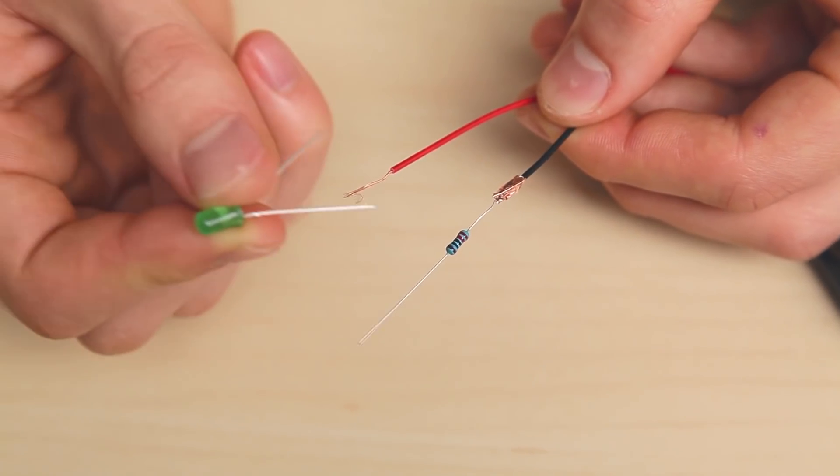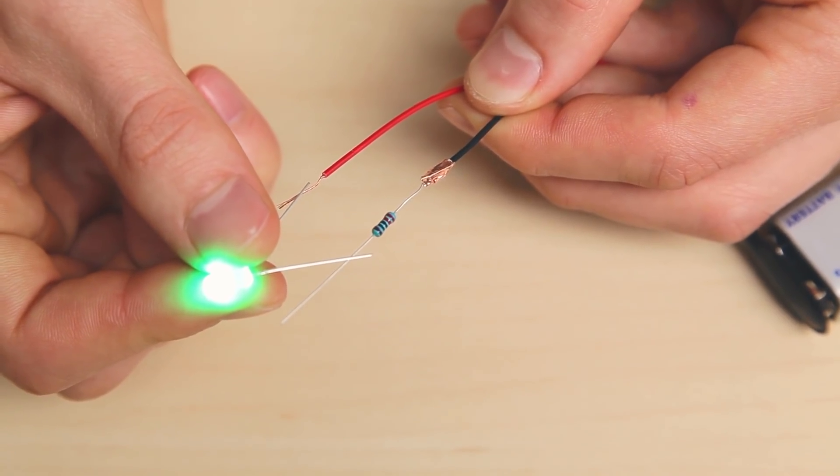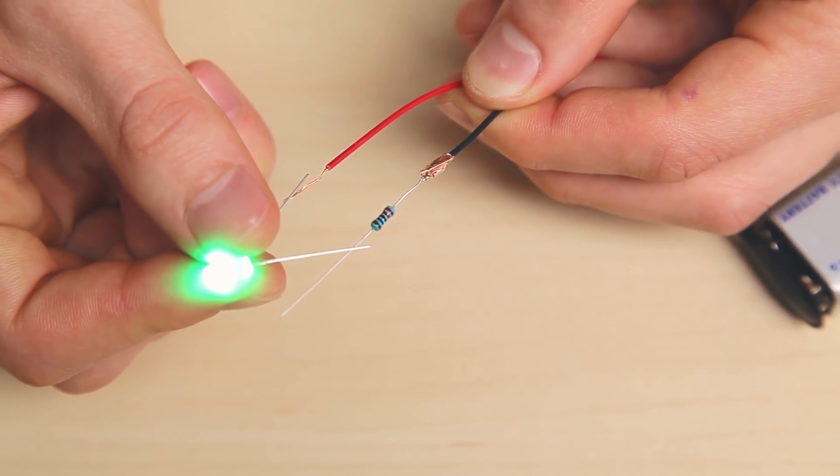Test your assembly with an LED. Touch the short wire of the LED against the resistor and the long wire against the red wire.